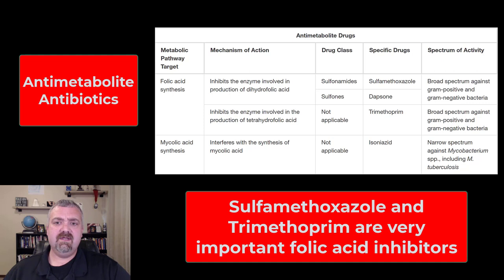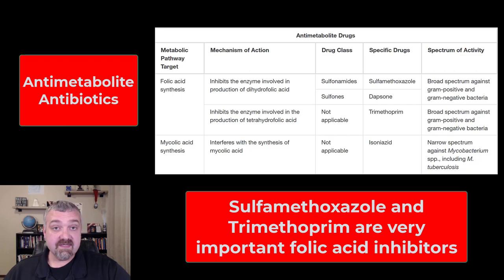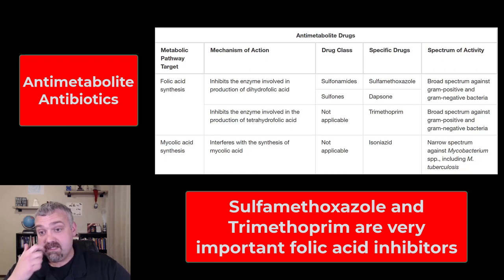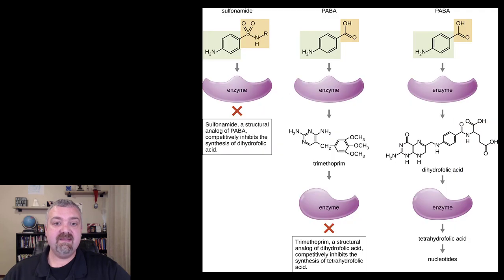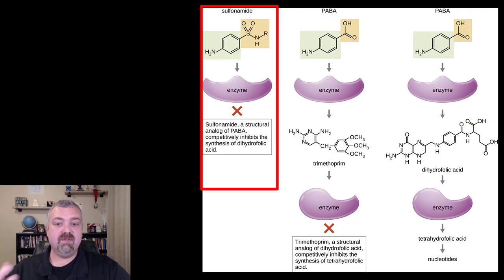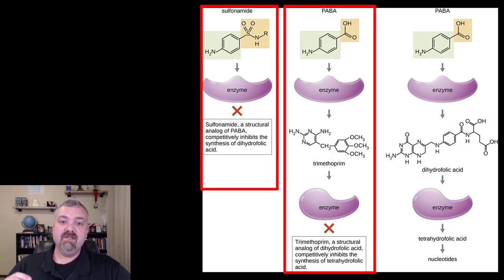The sulfones — just one thing to know about them — the example there would be dapsone. It is really only used to treat Hansen's disease, which used to be called leprosy. We don't have to know much about that, but let's go ahead and look at this picture here where we can see both sulfamethoxazole and trimethoprim in action.